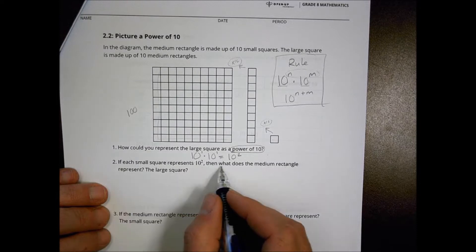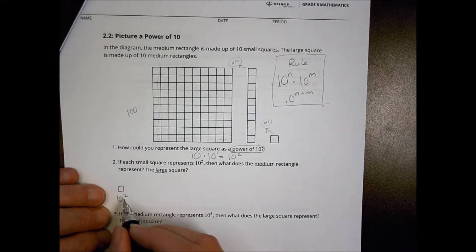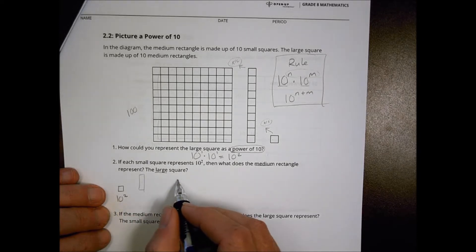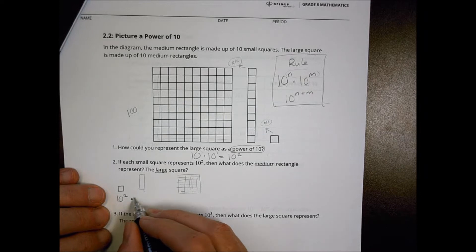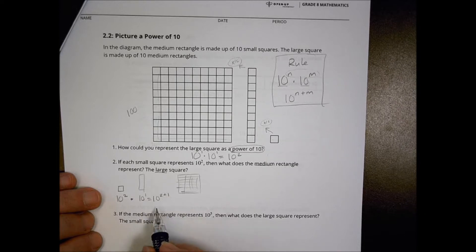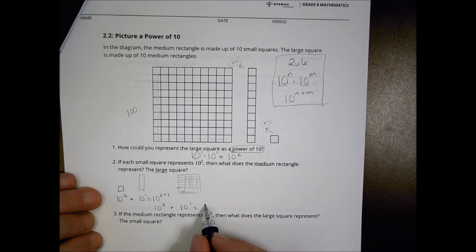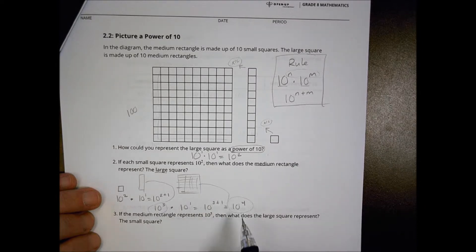If each small square represents 10 to the second, then what does the medium rectangle and the large square represent? I'm going from the little one, which is 10 to the second power, to the medium one and then to the large one. Every time I go to one more, I'm multiplying it by 10 to the first. So to go to the medium one, it's 10 to the second times 10 to the first, which is 10 to the two plus one, which is 10 to the third. Now if I'm going to go to the large one, I'll take that value and multiply it again by 10 to the first, which is 10 to the three plus one, which is 10 to the fourth.